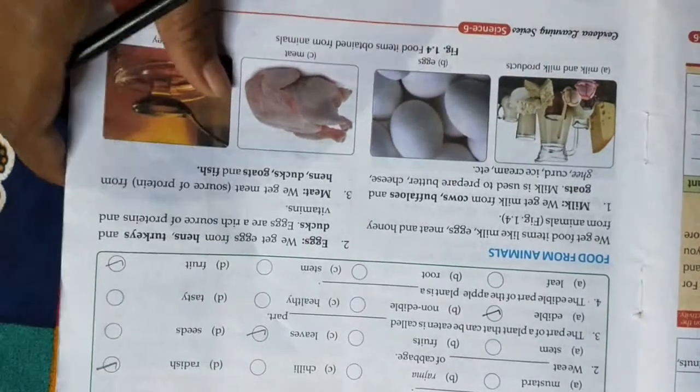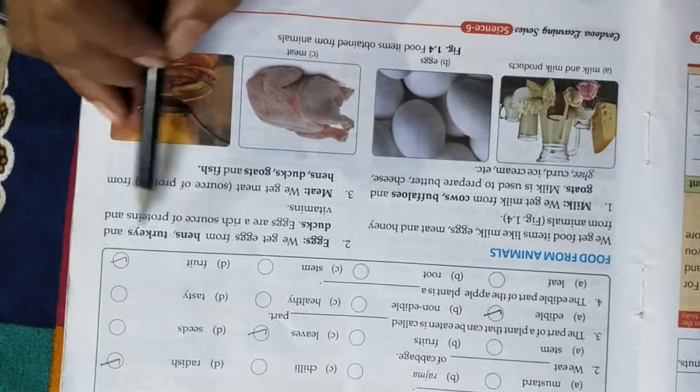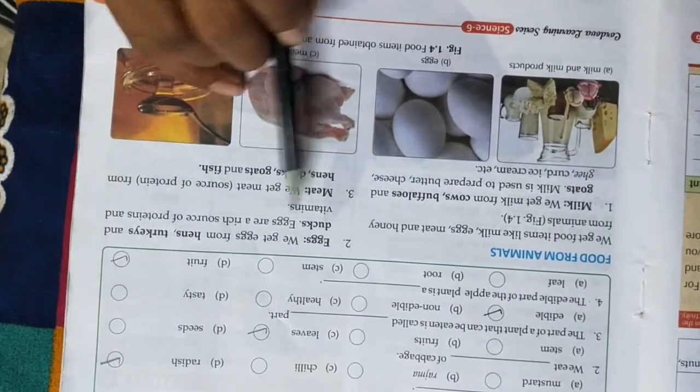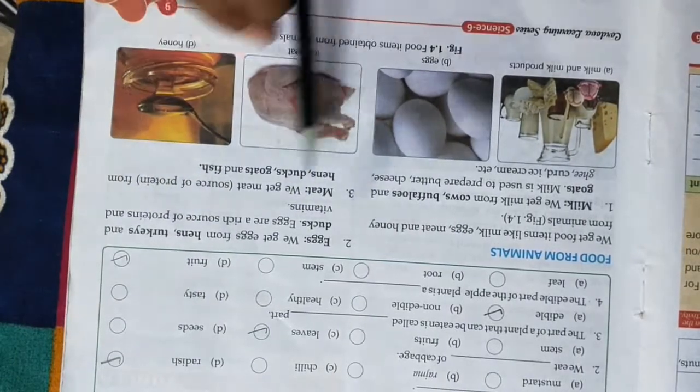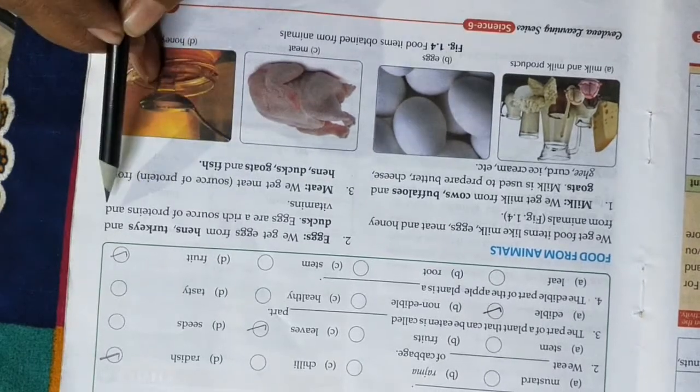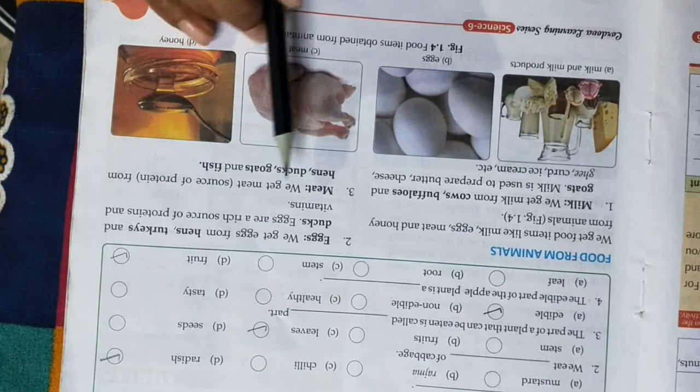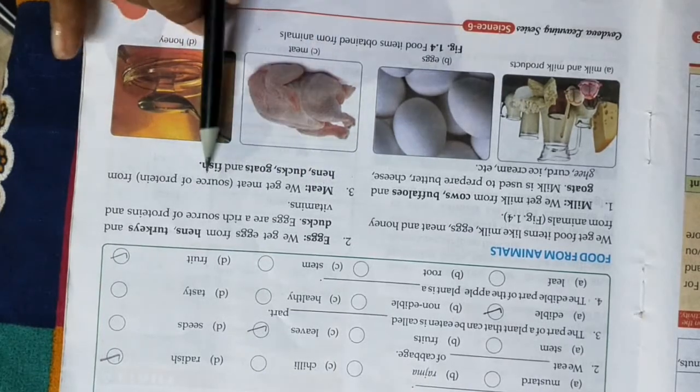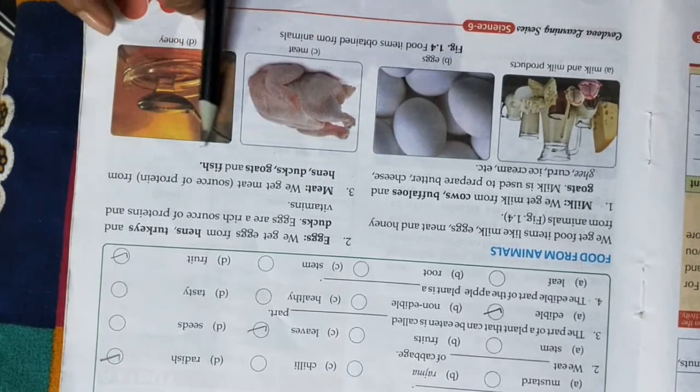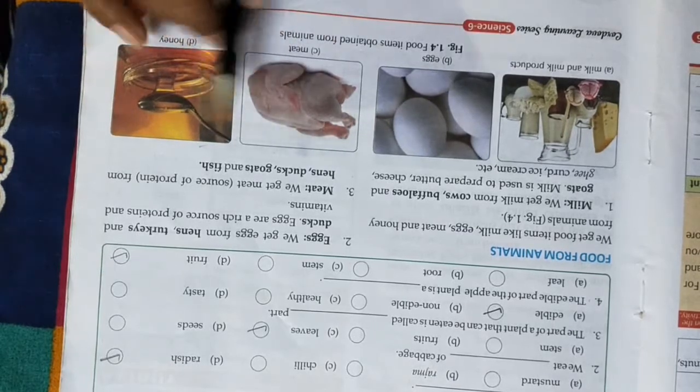Next, we get eggs from hen, turkeys, and ducks. We get meat from hen, duck, goat, and fish.